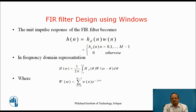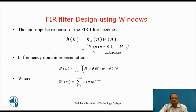The unit impulse response of the FIR filter is obtained by multiplying the desired unit impulse response hd(n) by the window coefficients W(n). So, in the case of a rectangular window, the coefficients are all 1, and h(n) will be equal to hd(n) for n = 0 to M−1 and 0 otherwise. Now h(n) is of finite duration and it is causal, and so it is practically realizable.